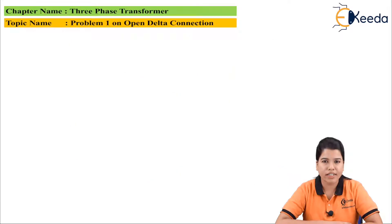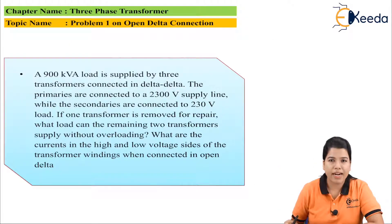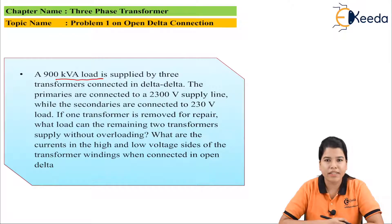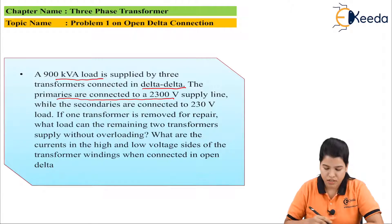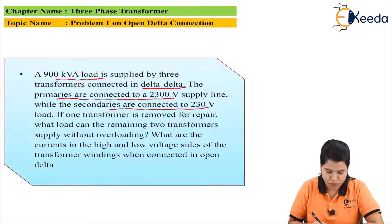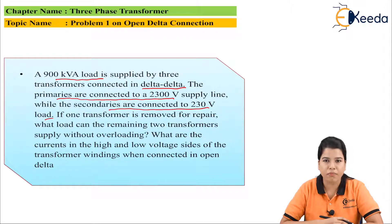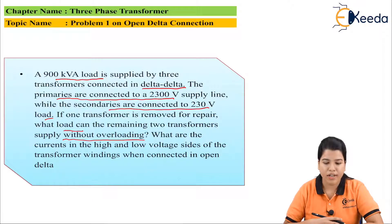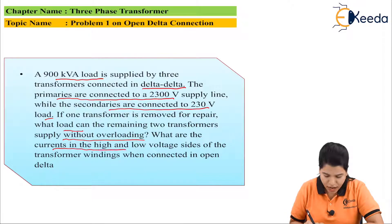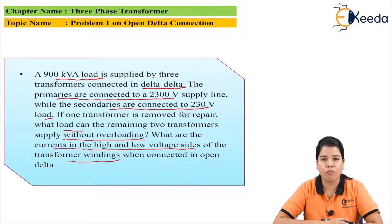The problem on the open delta connection can be stated as: a 900 kVA load is supplied by three transformers connected in delta-delta. The primaries are connected to a 2300 volt supply line, while the secondaries are connected to a 230 volt load. If one transformer is removed for repair, what load can the remaining two transformers supply without overloading? What are the currents in the high voltage and low voltage sides of the transformer winding when connected in open delta?